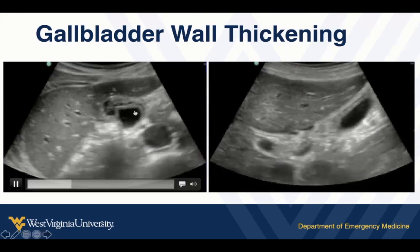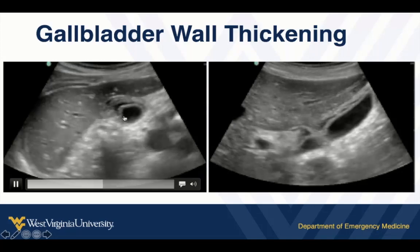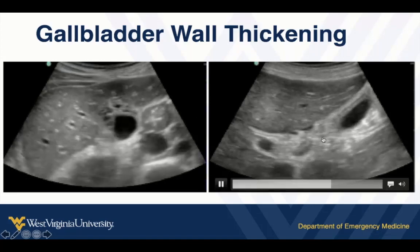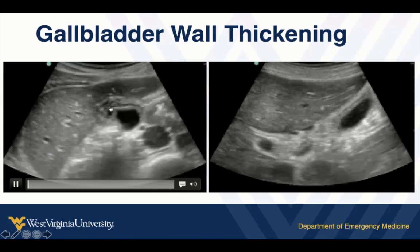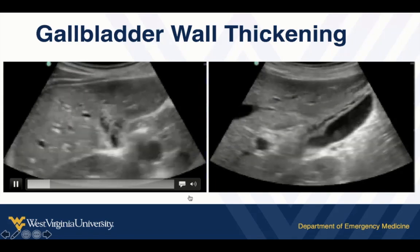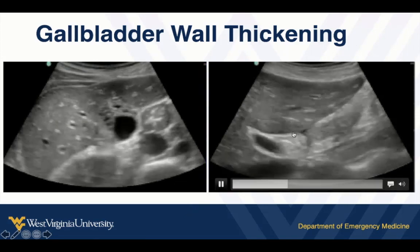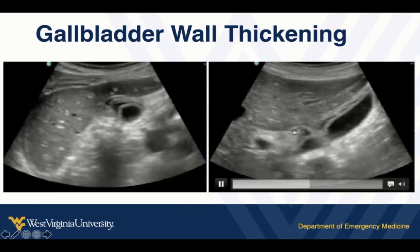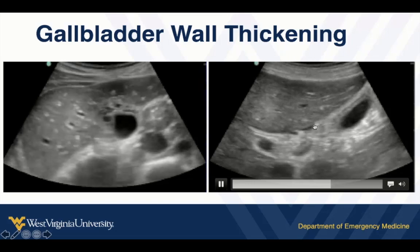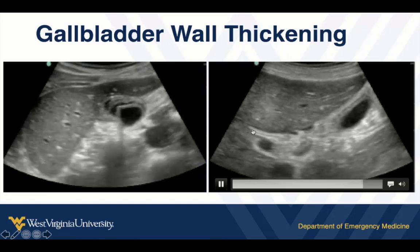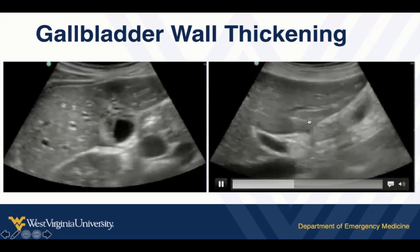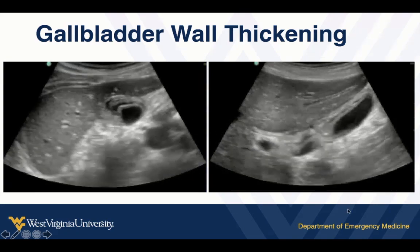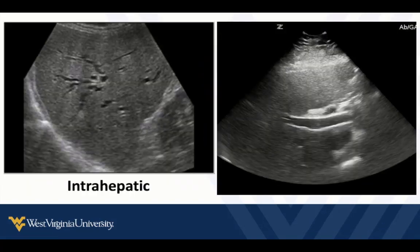We may see thickening and layering of the gallbladder wall. Both of these cases are acalculous. The wall may have a layered appearance, or sometimes it's just thick and ill-defined. In this example, we also see a little pericholecystic fluid layering right along the wall of the gallbladder. These are abnormal gallbladders — in both cases this looks like acalculous cholecystitis.